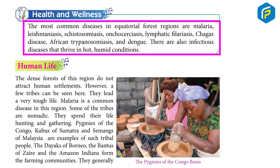The most common diseases in the equatorial forest region are malaria, schistosomiasis, onchocerciasis, lymphatic filariasis, yaws disease, African trypanosomiasis, and dengue. There are also infectious diseases that thrive in hot, humid conditions.